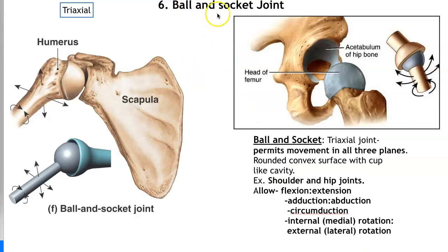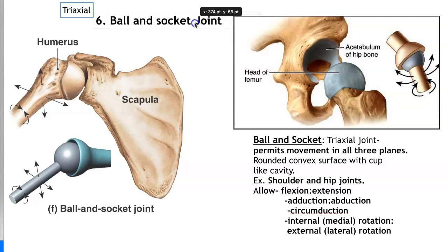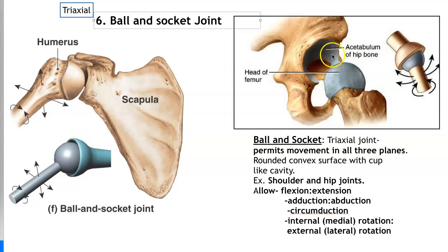Our last type of synovial joint is the ball and socket joint — a triaxial joint that moves in all three planes. We only have two ball and socket joints in our body: the head of the humerus in the shallow glenoid fossa, and the head of the femur in the deep acetabulum. The ball and socket joint allows flexion, extension, abduction and adduction, circumduction, internal rotation, and external rotation.